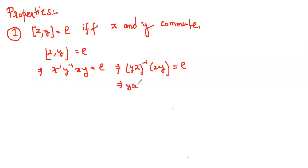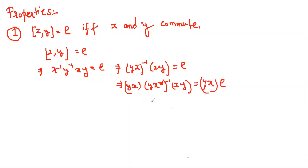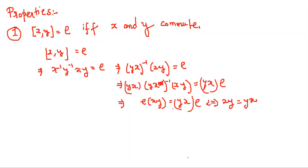Now what we can do is multiply by YX on both sides. So we get YX times YX inverse equals E, and therefore XY equals YX. This implication can also be reversed, so it is if and only if. This is a very easy property.